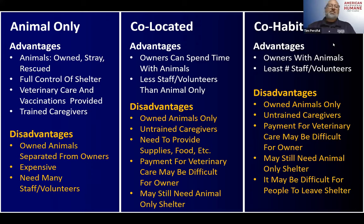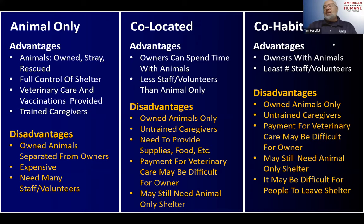One of the biggest pluses of an animal-only shelter is you have full control and trained caregivers providing care. However, it's expensive and requires a lot of staff and volunteers. For co-located shelters, advantages include people being with their animals — not 24/7 like co-habitated, but able to visit — and you need a lot less staff. You can only really have owned animals and do have untrained caregivers.